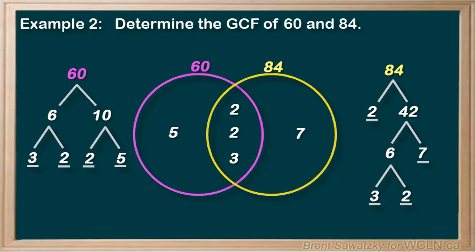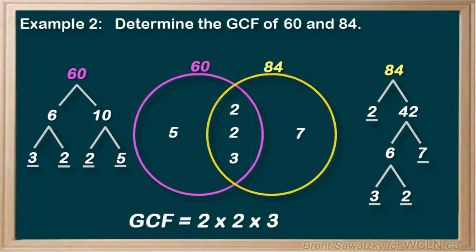Our final step is simply to multiply all the items in the overlap region. In this case, we have two 2s and a 3. So 2 times 2 is 4, times 3 is 12. Now we know that the greatest common factor of 60 and 84 is 12.